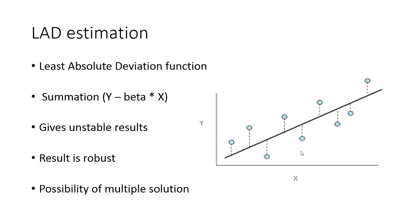The least absolute deviation estimation is related to the ordinary least square regression estimation. In an ordinary least square estimation, what we essentially do is we take the difference of the regression line from each data point, we square the difference, take the sum, and minimize the sum of the squares.